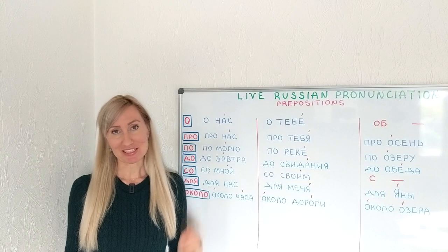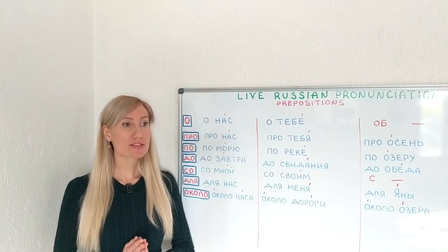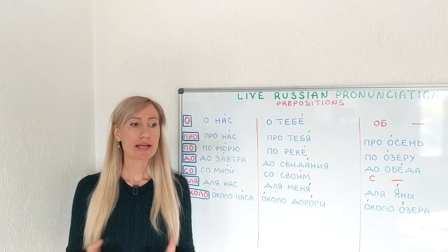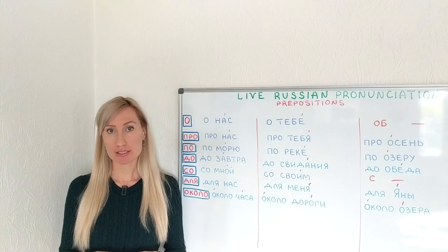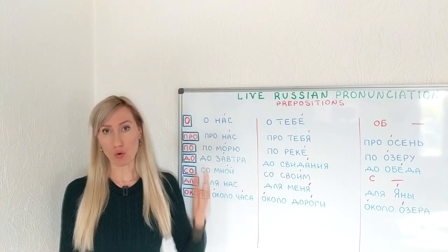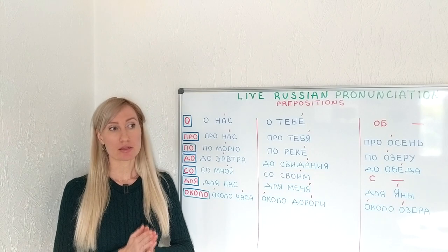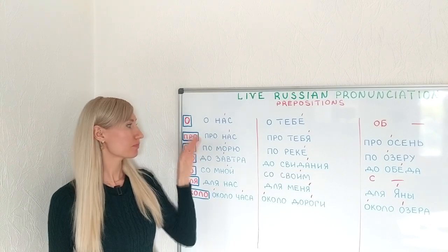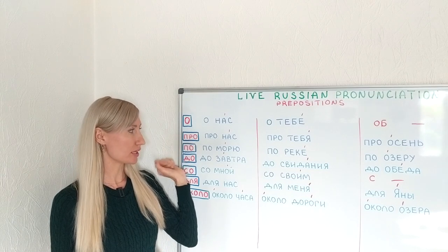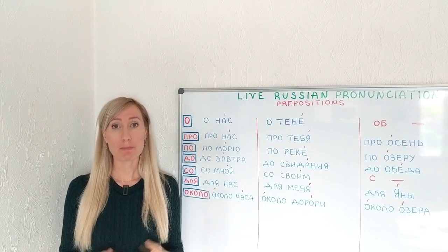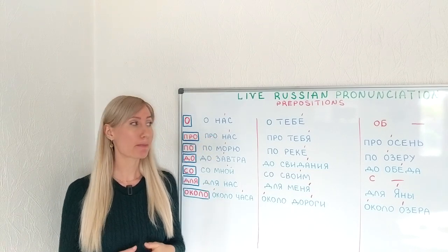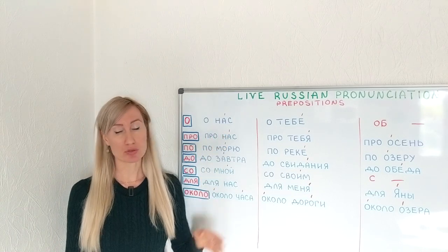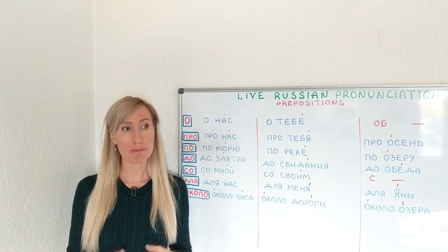Now let's get to the preposition ПРО, which also means 'about' but it's more colloquial — it's not used in official texts. Officially it's О, but when people speak they often say ПРА. For example, ПРА НАС — about us. It's close to the stressed syllable, so it sounds like А — ПРА НАС.